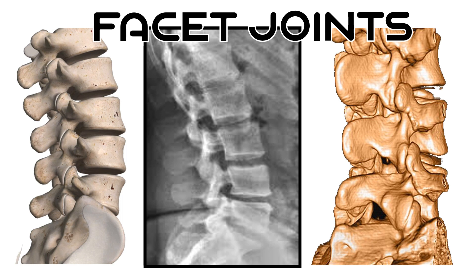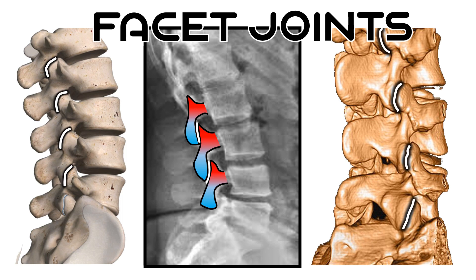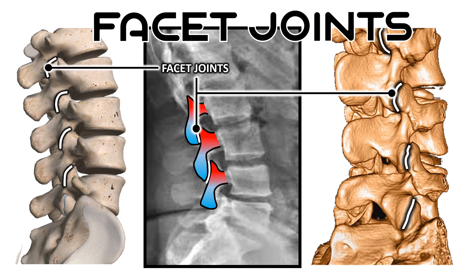There are two right and left, and two superior and inferior articular processes. These structures, also known as zygapophysis, link each vertebra with the adjacent one and provide stability to the spine.